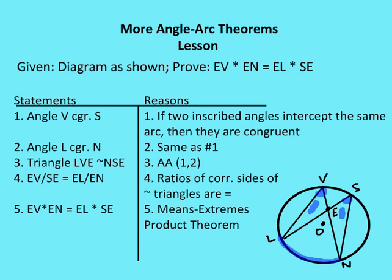Similarly, angle L is congruent to angle N because they both intercept the same arc VS. So by AA similarity, triangle LVE is similar to triangle NSE. From the similarity, we get EV over SE equals EL over EN, because ratios of corresponding sides of similar triangles are equal. Then by the means-extremes product theorem, we can rewrite this as EV times EN equals EL times SE.